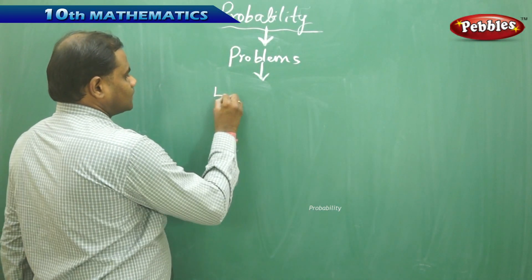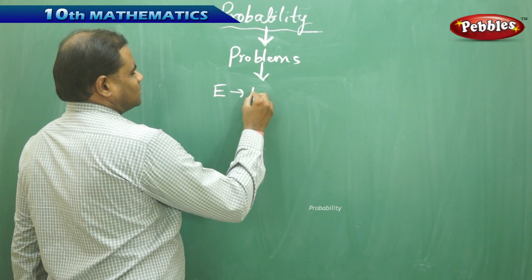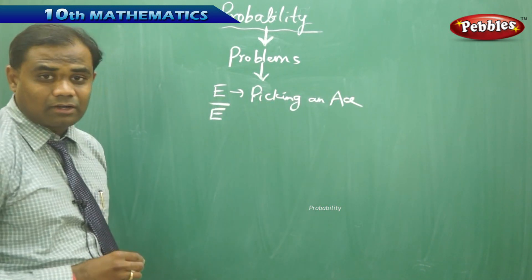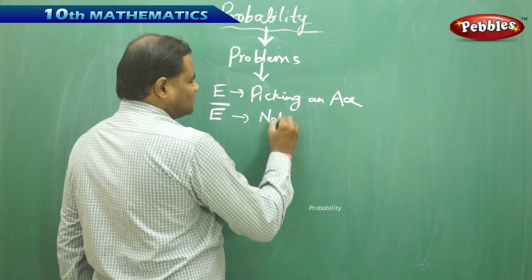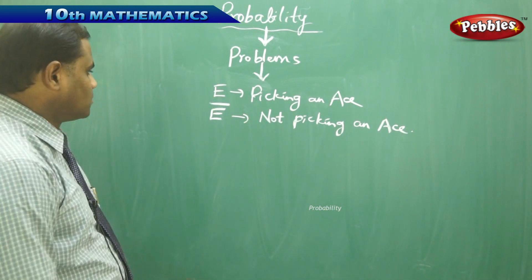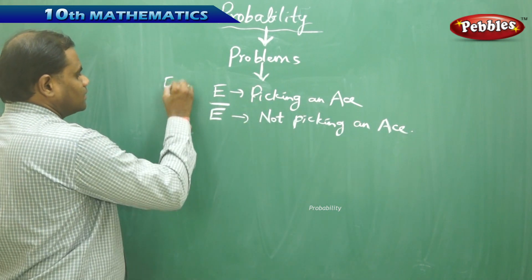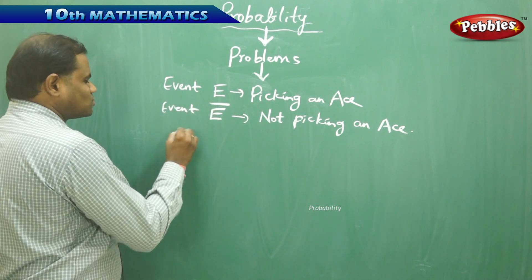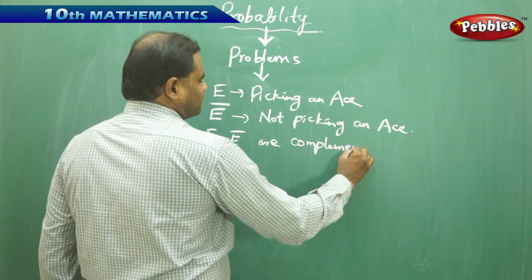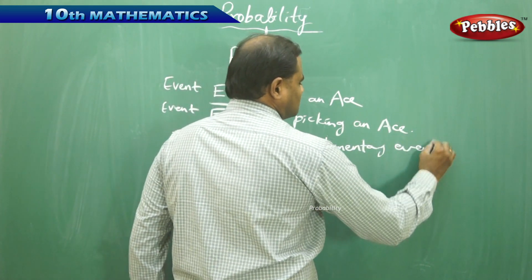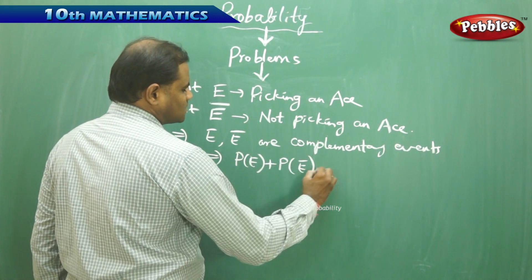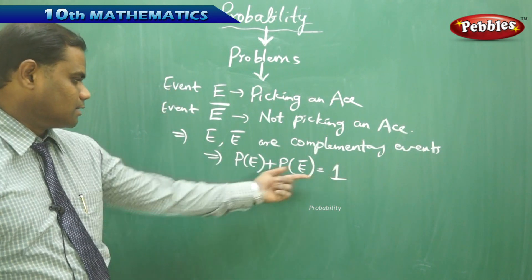If E is the event of picking an ace, then its respective event E bar or E complement is not picking an ace in the case of this playing cards problem. So E is picking an ace and E bar is not picking an ace. These two are complementary events, which implies E and E bar are complementary events, and because they are complementary events, P of E plus P of E bar is equal to 1, as per the mathematical definition.